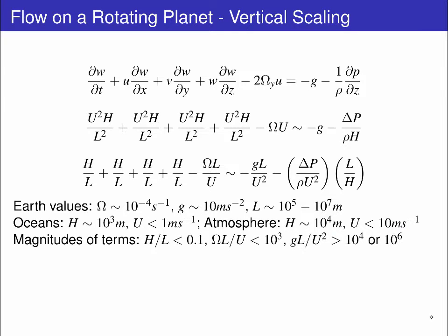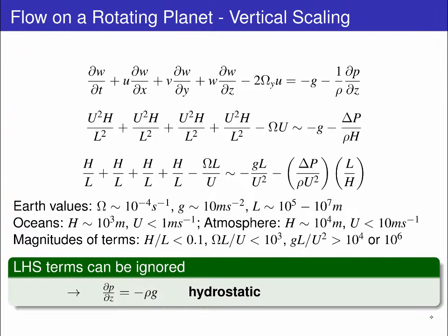We can plug these magnitudes in to find a fair separation of scales between the left and right-hand sides. H on L is less than one, omega L on U is under a thousand, while GL on U squared is over tens of thousands or even millions. So, the leading order dynamical balance for the vertical component of the rotating Euler equation is between the gravity and pressure terms, meaning we can ignore the left-hand side.